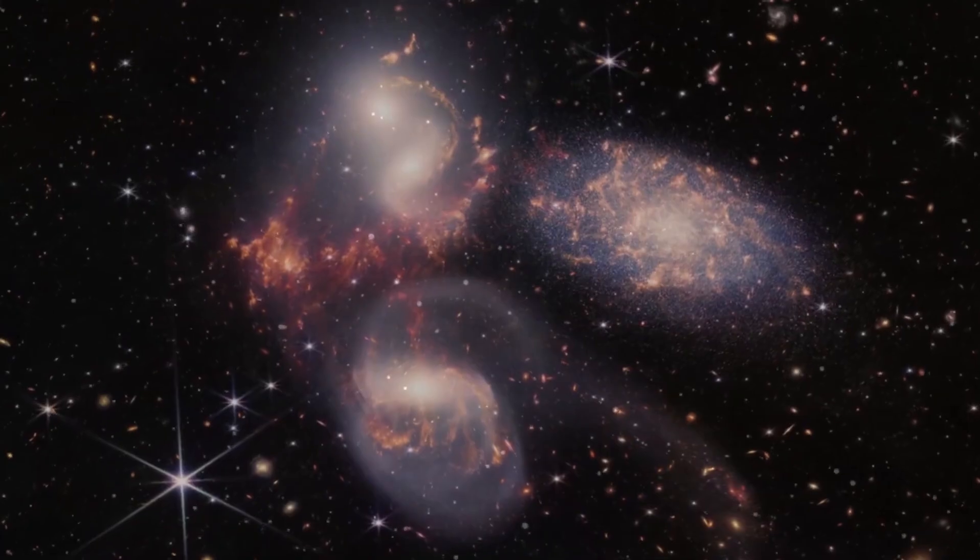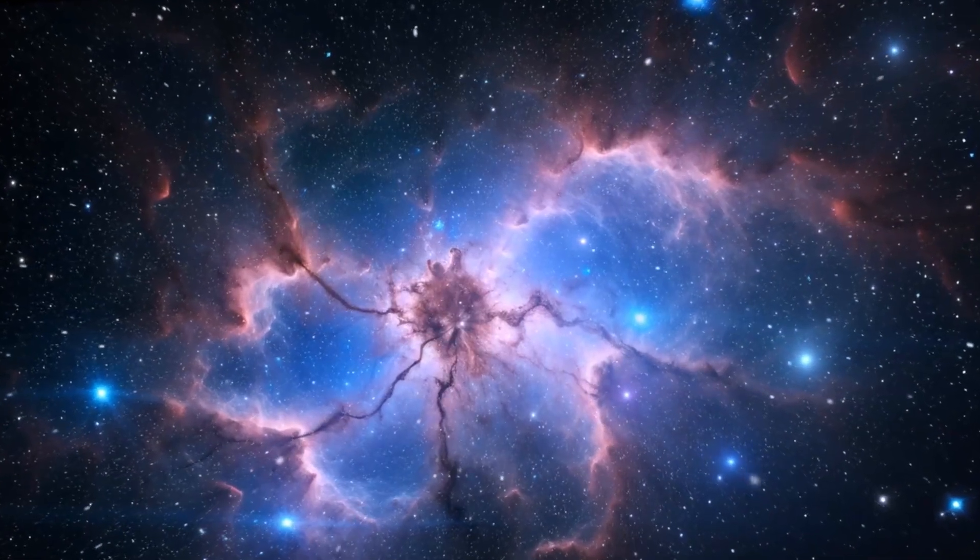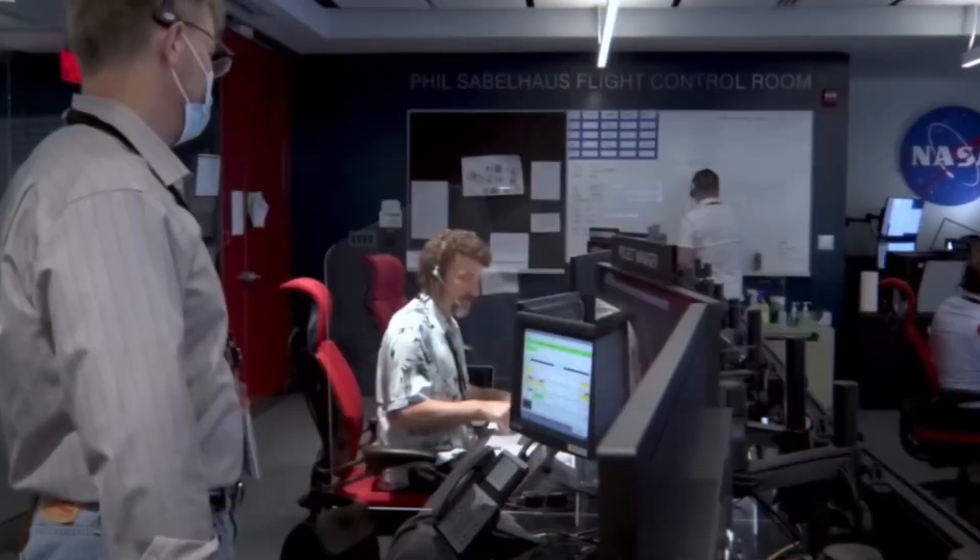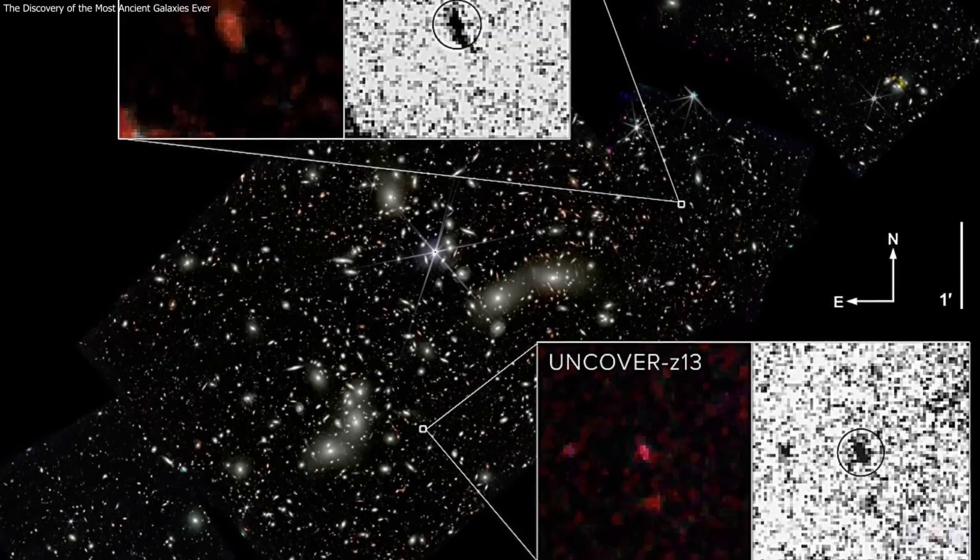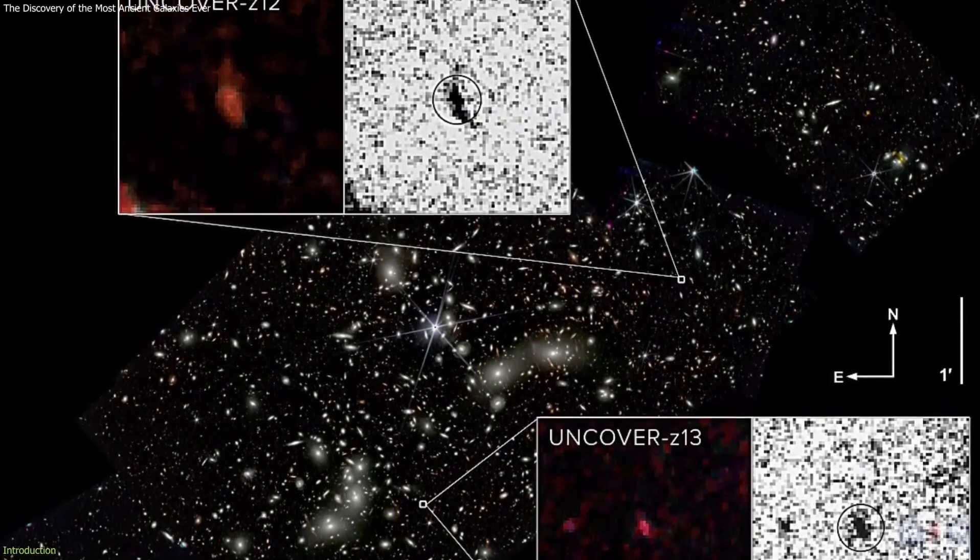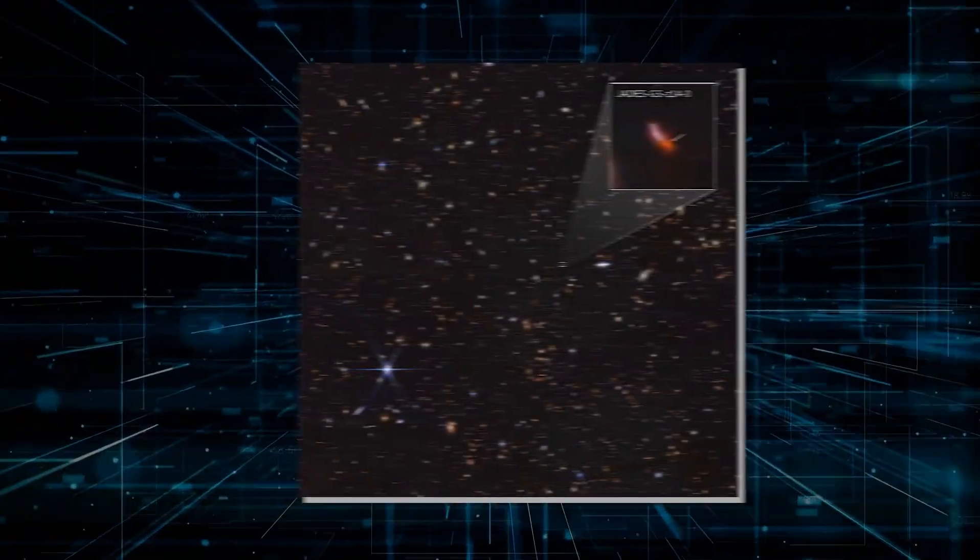The furthest galaxy, JADES-GS-z14, is seen as it was a mere 290 million years after the Big Bang, existing at least 100 million years earlier than the previous record holder. That means if the universe is 13.8 billion years old, we're observing the galaxy when the cosmos was only 2% of its current age. The light James Webb saw from this primordial galaxy has been traveling for 13.5 billion years on its way to reach us.